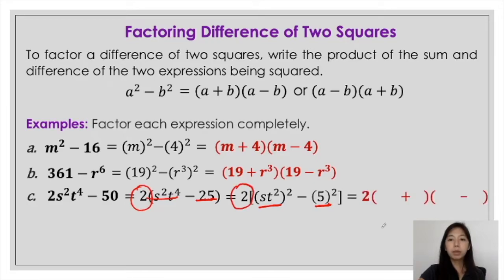So what will happen now is that you first have to consider the 2, or the common factor that you took out, and then get the square roots. That would be 2 times the quantity of st squared plus 5, times the quantity of st squared minus 5.